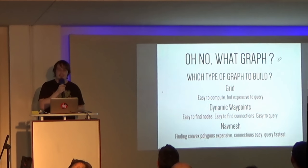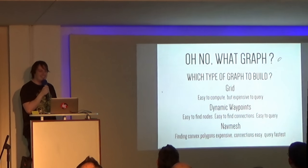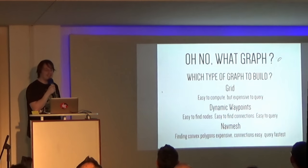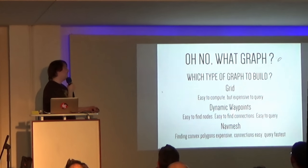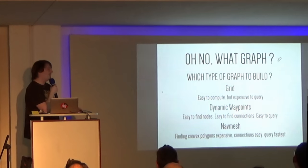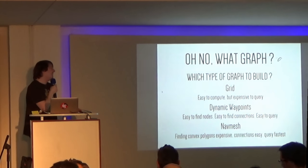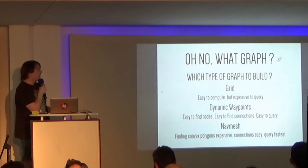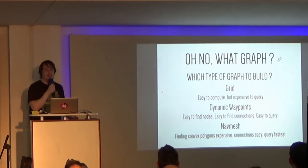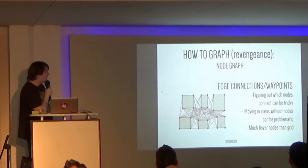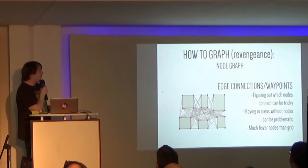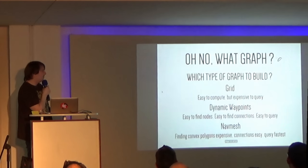I like this slide just because of the smiley face. So, which type of graph do we want to build? Grid - easy to compute, expensive to query. Dynamic waypoints - it's easy to find the nodes. That totally didn't say easy to find connections. That is supposed to say it's difficult to find connections. Because that is the issue with that. It's easy to query. We don't have many nodes. So, it's relatively fast to find a path. But it's difficult to figure out which nodes we're supposed to connect. You really don't want to end up with a mess like this. So, ideally, you find some way to reduce which nodes you want to connect. But that is really tricky, especially when you're dynamically generating it.